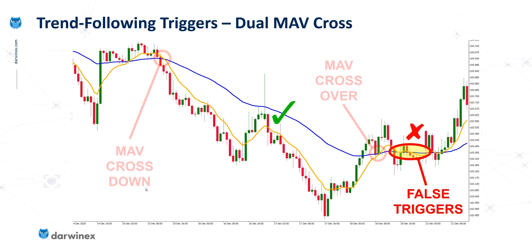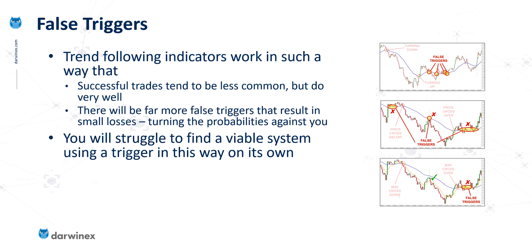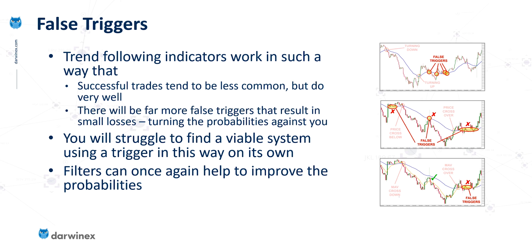Generally in trend-following systems, the usual pattern is that there tend to be a small number of very successful trades, but a far higher number of trades that lose small amounts. And these, of course, turn the probabilities against you. Because of this, you'll usually struggle to find a viable system that just uses a trigger like this on its own. Maybe in the past this type of system worked in isolation, but these days you'll probably struggle. One of the things we can start to do to improve the reliability is to use filters — using filters to categorize the market regime and then to help define rules to enhance your trading system. I've found that this can often improve the probabilities.